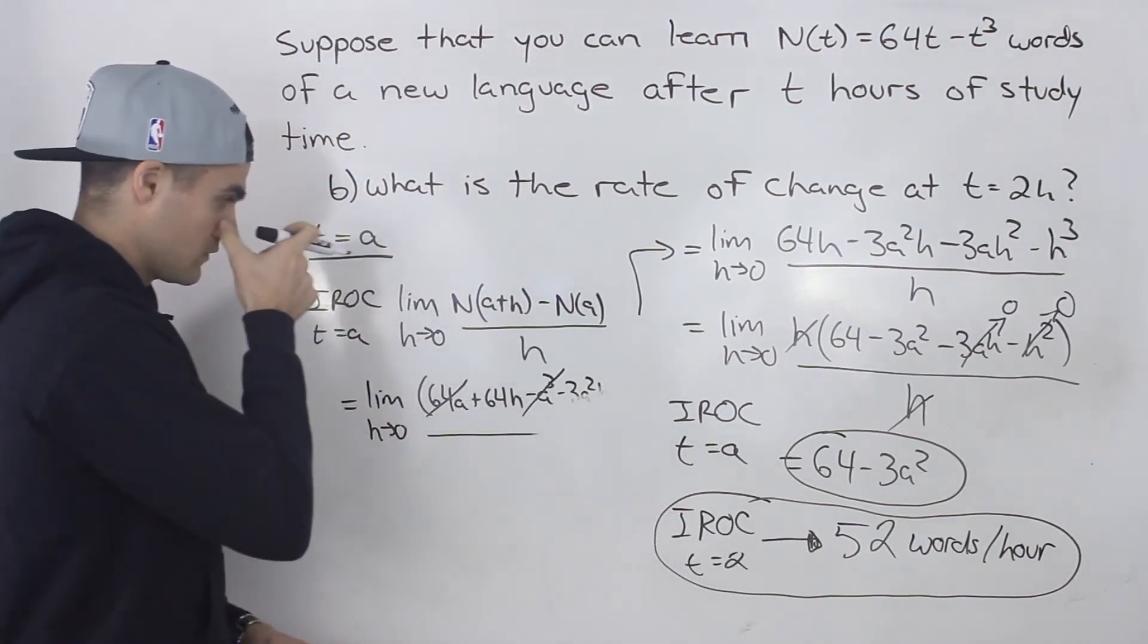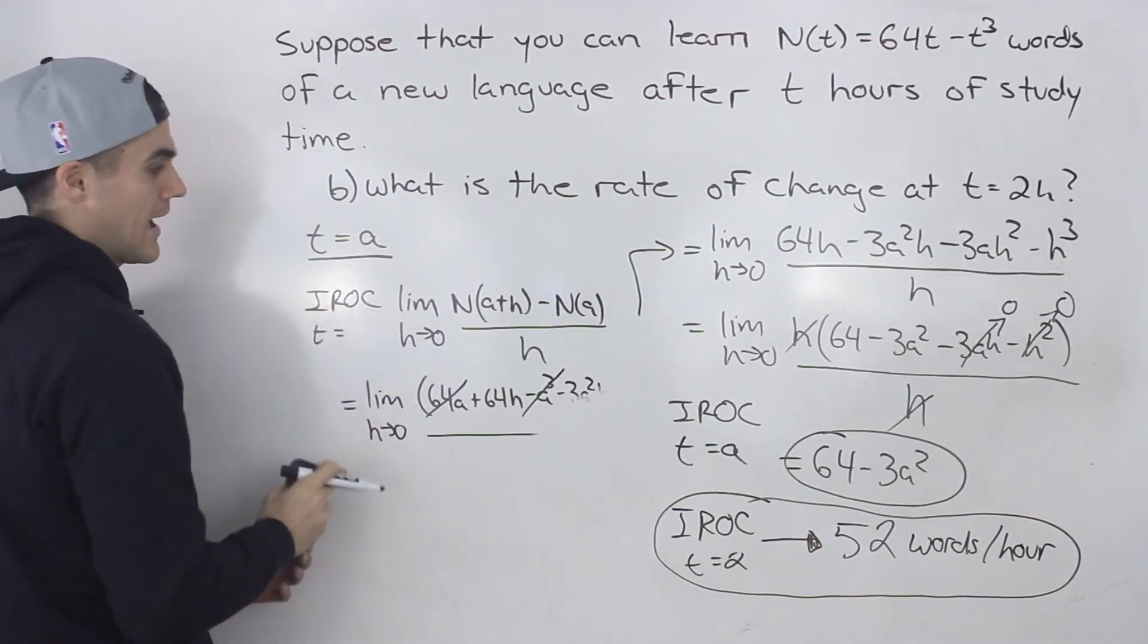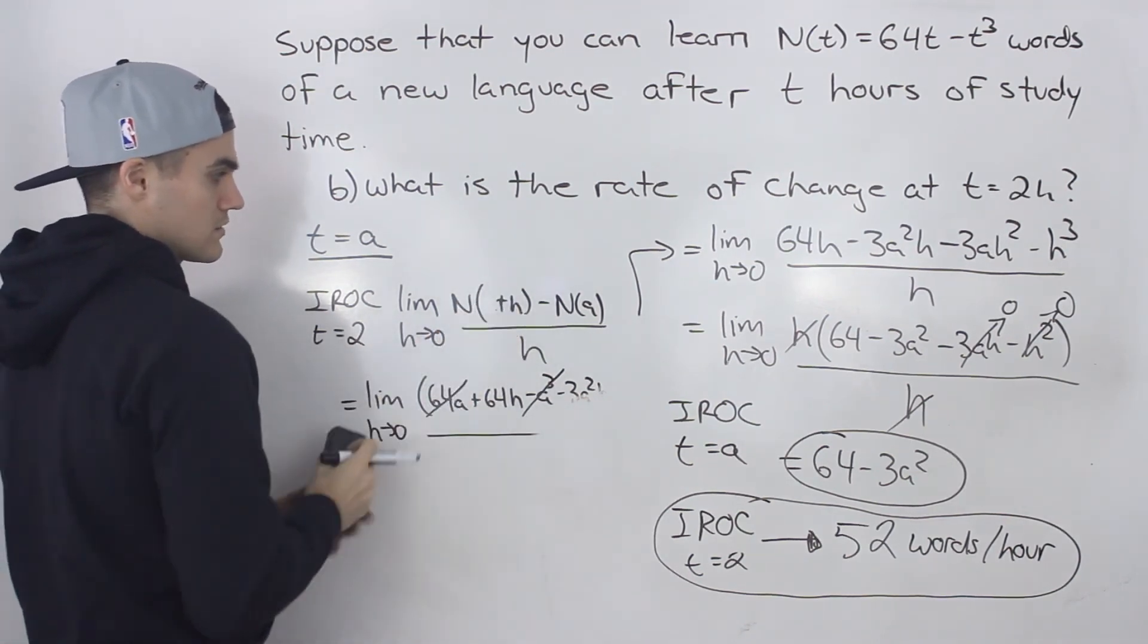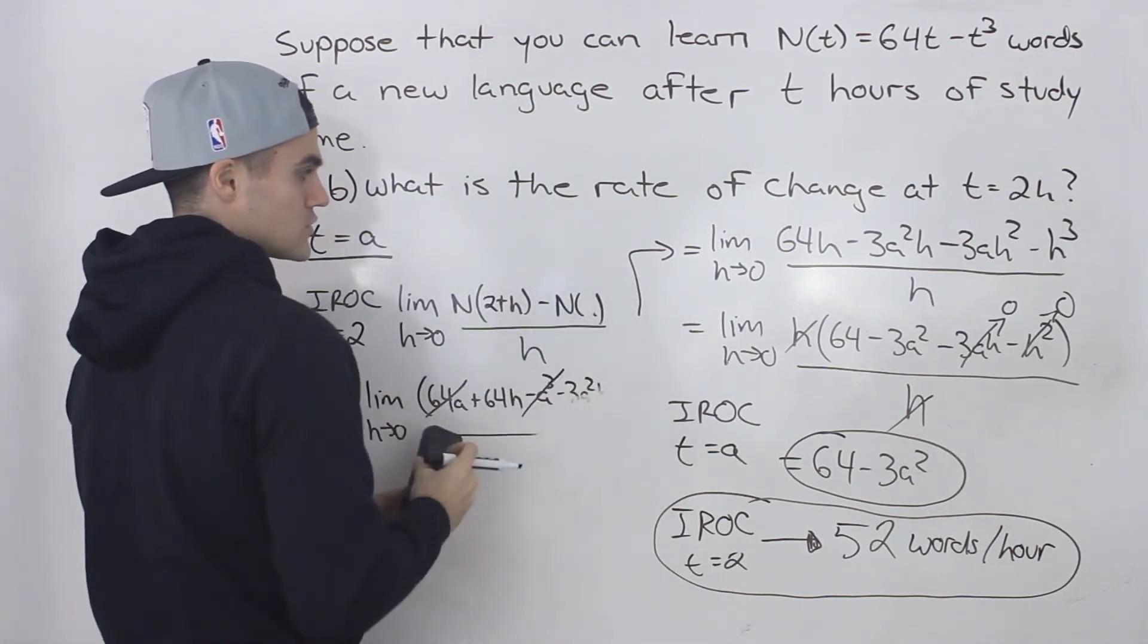Now, you could have also found the instantaneous rate of change directly at a t value of 2. So instead of plugging in A, you would just plug in 2 here. So you'd have 2 plus h. And then here you'd have N of 2.